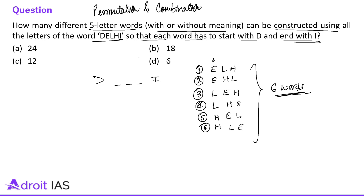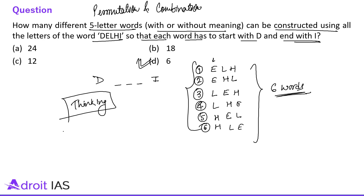This question belongs to permutation and combination but is a very simple word formation question. It can be solved with general thinking only — no concept, no factorial, no formula is required. Just very simple counting. This will take around 40 to 50 seconds, not more than this.